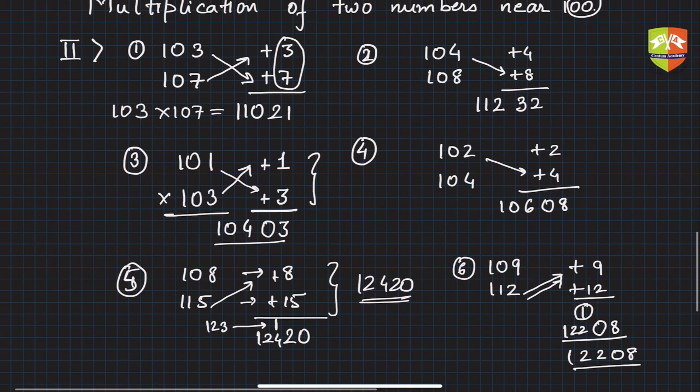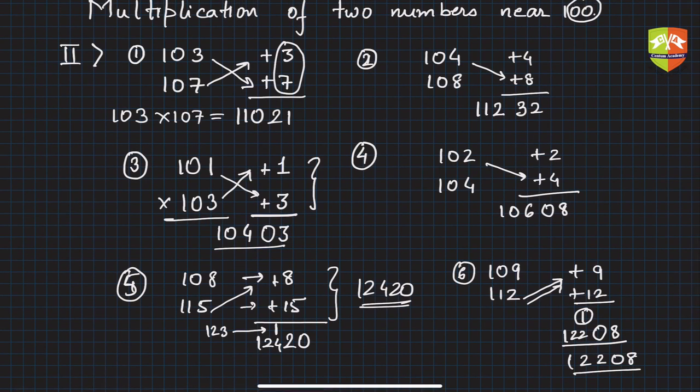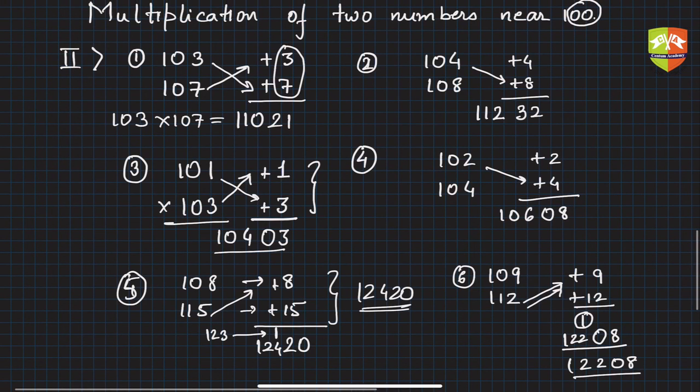It might appear time-taking while I'm explaining, but when you're fluent and have done practice, you can do it mentally. This is for the second case where numbers are just above 100. In the next session, we'll see when one number is below 100 and one is above 100.